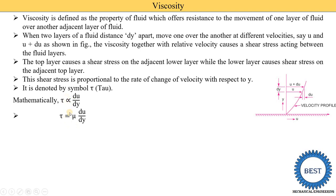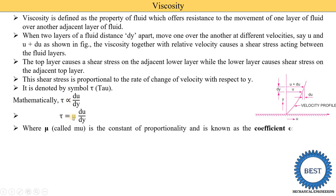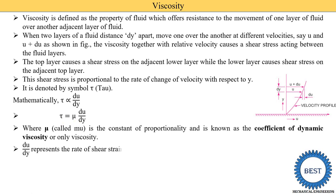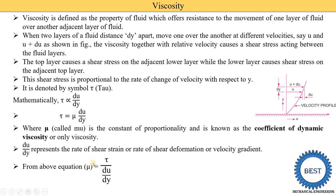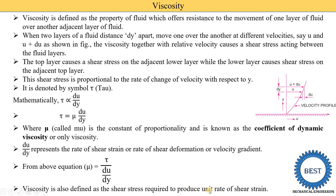We can convert this proportionality into equality by adding a constant mu, called the constant of proportionality. Mu is known as the coefficient of dynamic viscosity, or simply viscosity. So mu is equal to tau divided by (du/dy). Viscosity is also defined as the shear stress required to produce unit rate of shear strain. The term du/dy represents the rate of shear strain, rate of shear deformation, or velocity gradient.